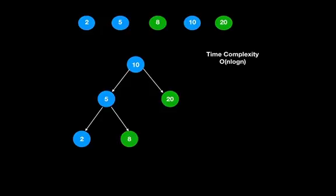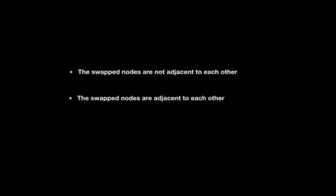When we write the inorder traversal of a binary search tree and swap any two nodes, the following two cases arise: the swapped nodes are not adjacent to each other, and the swapped nodes are adjacent to each other. Let us look into these cases one by one, starting with the case where the swapped nodes are not adjacent.